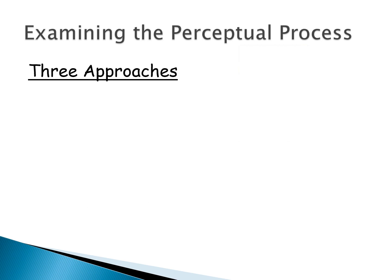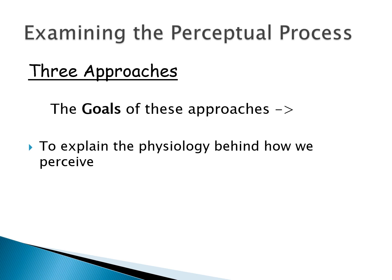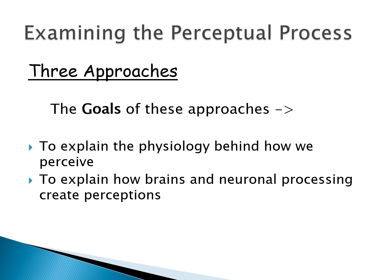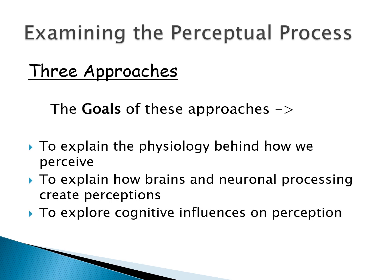The goals of all of these approaches are to explain the physiology behind how we perceive — how brains and neuronal processing really create our perceptions — and to explore the cognitive influences on perception. We do a lot of really basic perception research, but what we're often interested in is top-down processing: how do background experiences and cognition influence our perception.